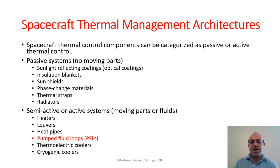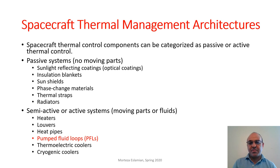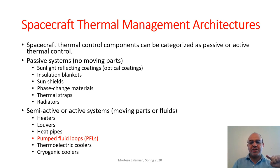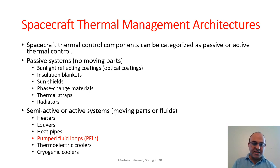For passive systems — components with no moving parts — we can think of sunlight-reflecting or optical coatings that we talked about in previous lectures, insulation blankets or multi-layer insulation MLI, sun shields for cryogenic applications like telescopes and infrared cameras, thermal straps which are simply metal connections to transfer heat from one point to another, and radiators whose job is to reject heat to space.